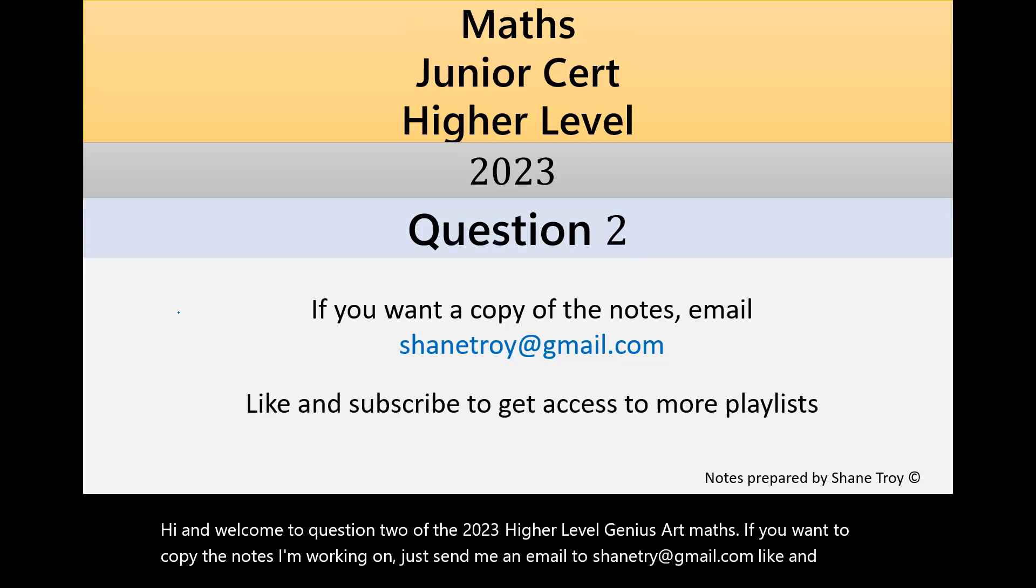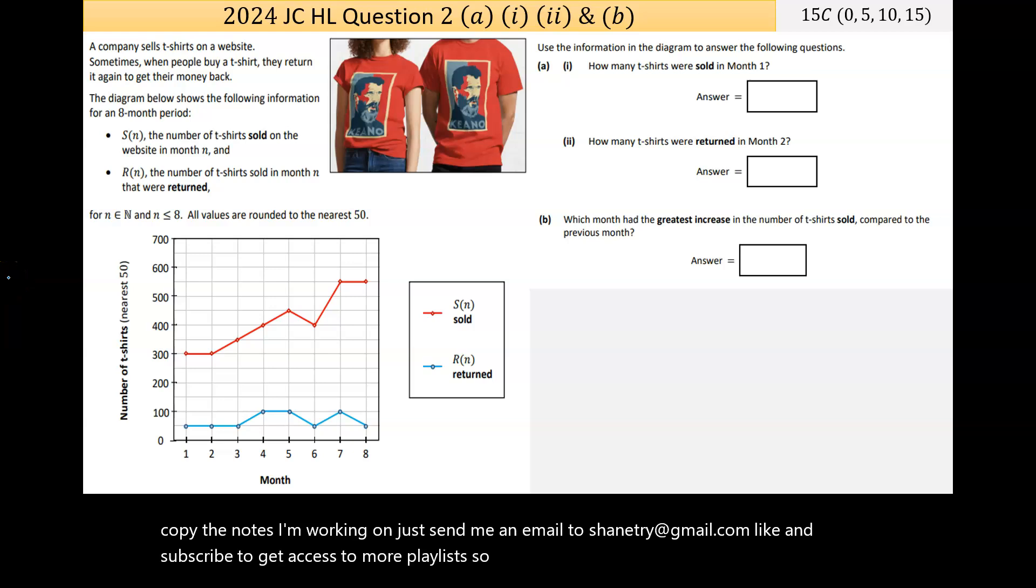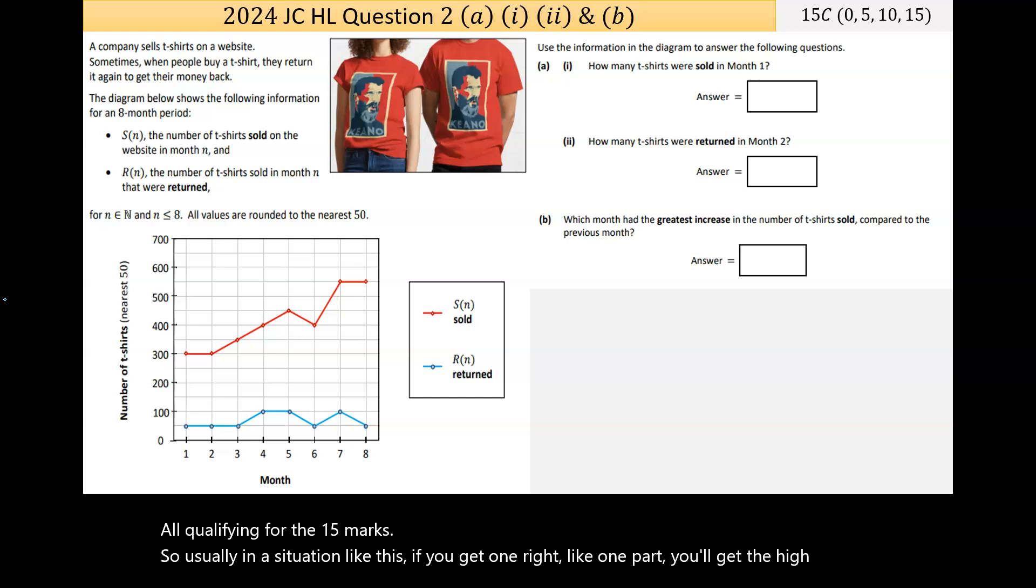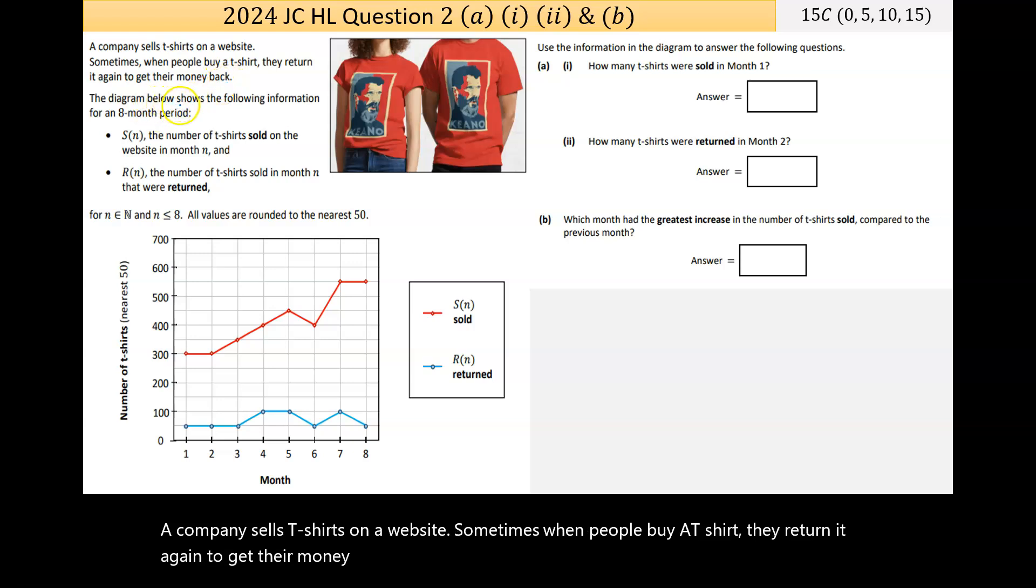Like and subscribe to get access to more playlists. So question two here, the first part has three different sections all qualifying for the 15 marks. Usually in a situation like this, if you get one part right, you'll get the high partial. A company sells t-shirts on a website. Sometimes when people buy a t-shirt they return it again to get their money back. The diagram below shows the following information for an eight month period. It has a function S(n), the number of t-shirts sold on the website in month n.